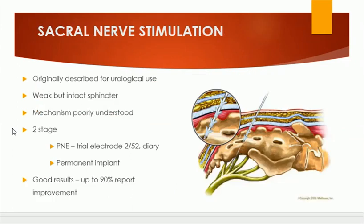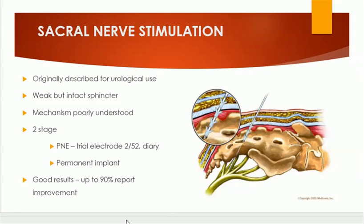Another way to treat anal incontinence is sacral nerve stimulation. Originally described for urological uses, a needle electrode is inserted at the sacral nerve. It is used when the sphincter is weak but intact. The mechanism is poorly understood, but good results of up to 90% improvement are reported. It is done for a weak but intact anal sphincter.